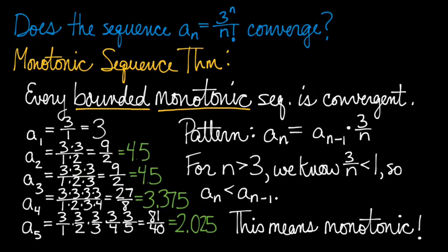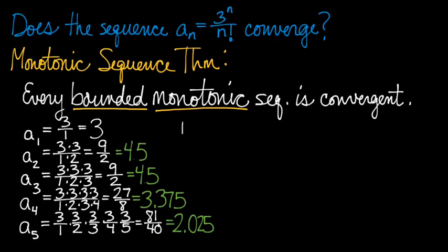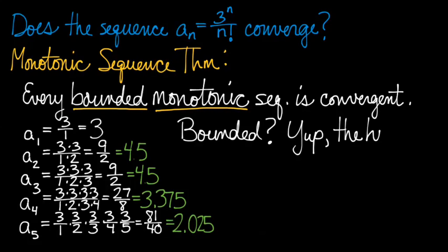Okay, so this sequence is monotonic, what about bounded? Well, if it increases to 4.5, and then it's decreasing ever after, then the highest term must be 4.5.